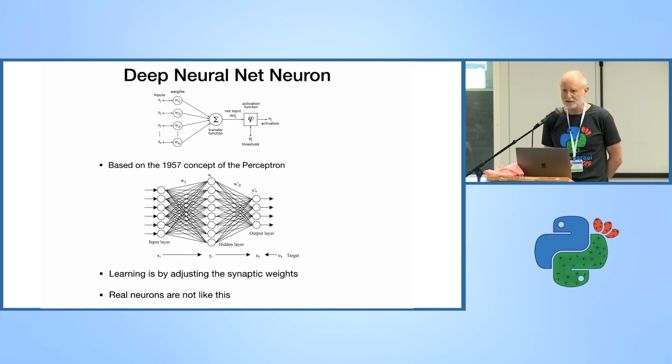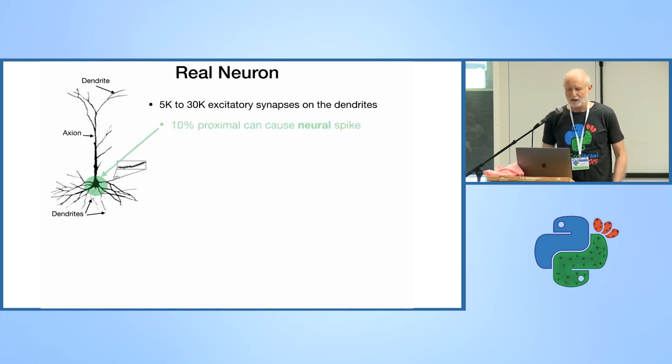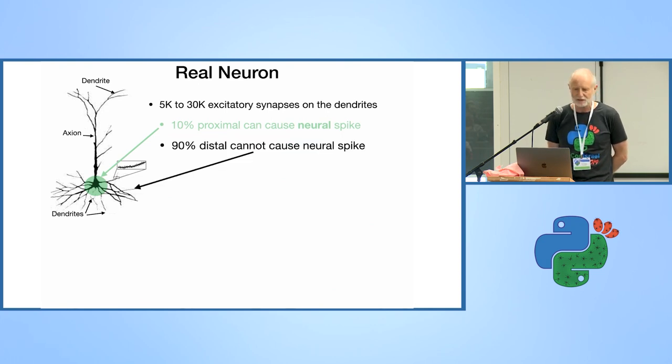Real neurons are not like this. This is a real neuron - cell body, dendrites. Each neuron has between 5,000 to 30,000 synapses or connections with other neurons. Only 10% of them, which are called proximal because they're close to the cell body, can actually cause a neural spike. The other 90% are called distal because they're more distant from the cell body. They don't cause a neural spike. For many years, they were a mystery. What are they there for if they don't cause neural spikes?